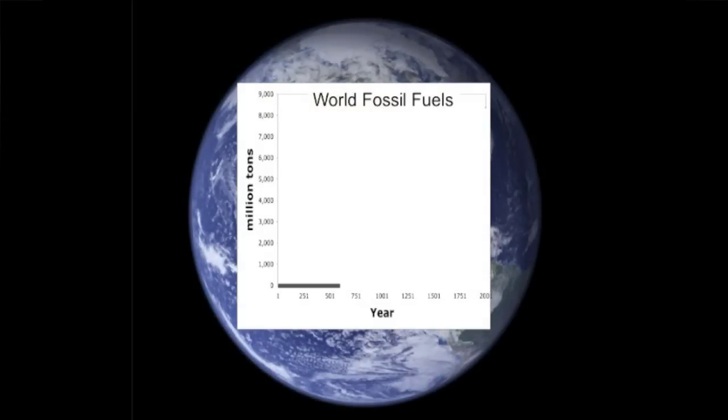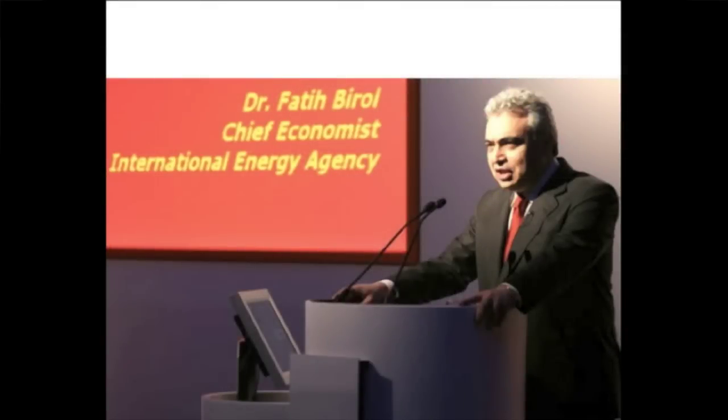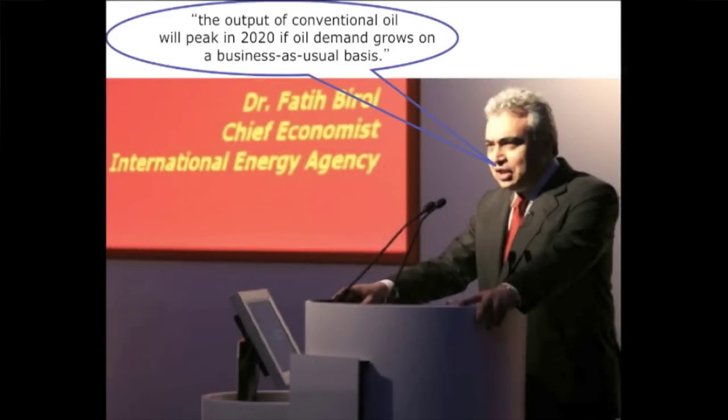One of the main drivers of all of this is the extent to which we have increased our use of fossil fuels — coal, oil, and natural gas. This graph goes back 2,000 years, and you can see that for most of those years we didn't use significant quantities at all. Then in the last two to two-and-a-half centuries there was a massive and rapid increase in fossil fuel use. Some people, and I'm among those, are questioning how long that can last, particularly with respect to oil, as the cheap and easy-to-get sources seem to have been used up. Very influential people such as Dr. Birrell at the International Energy Agency share these concerns, noting that the output of conventional oil will peak in 2020 if oil demand grows on a business-as-usual basis. Many commentators put the date even earlier.